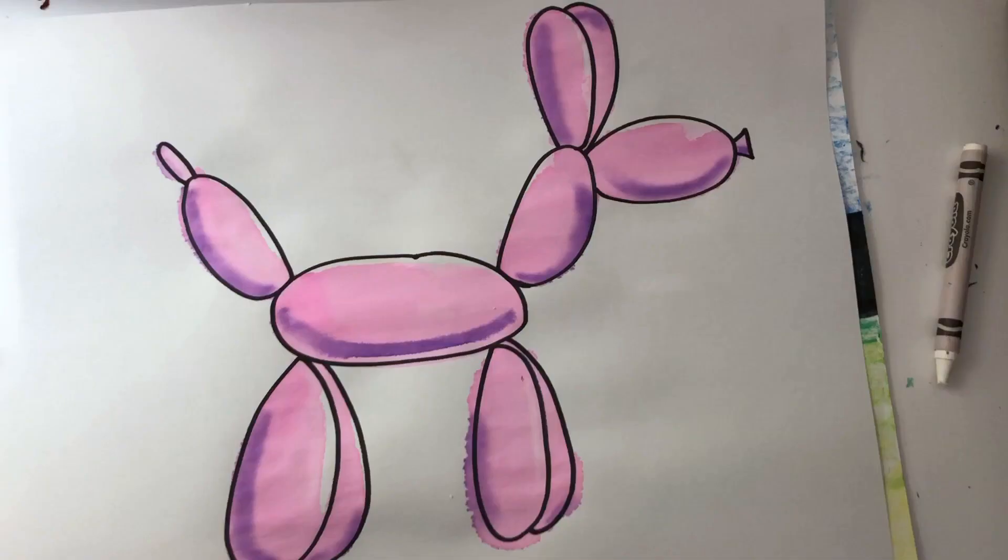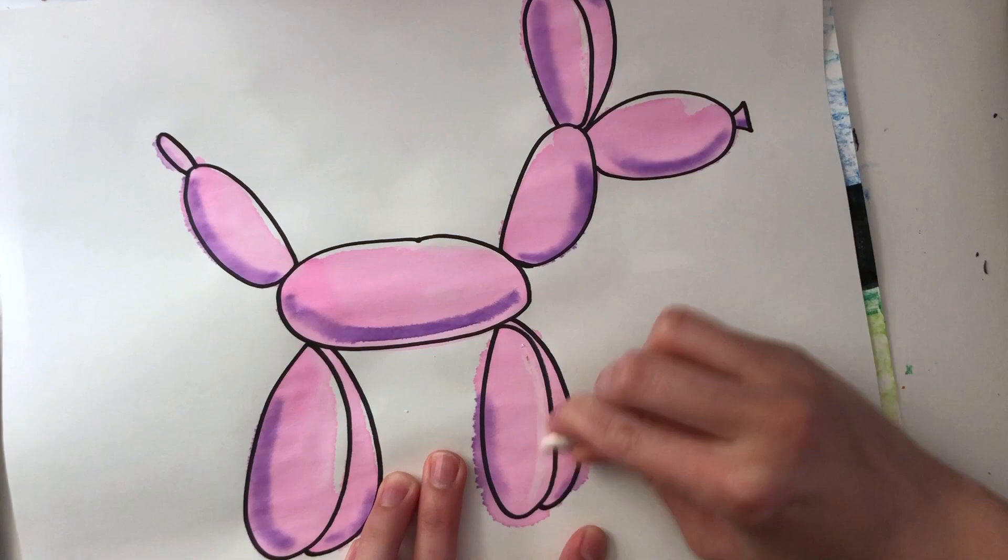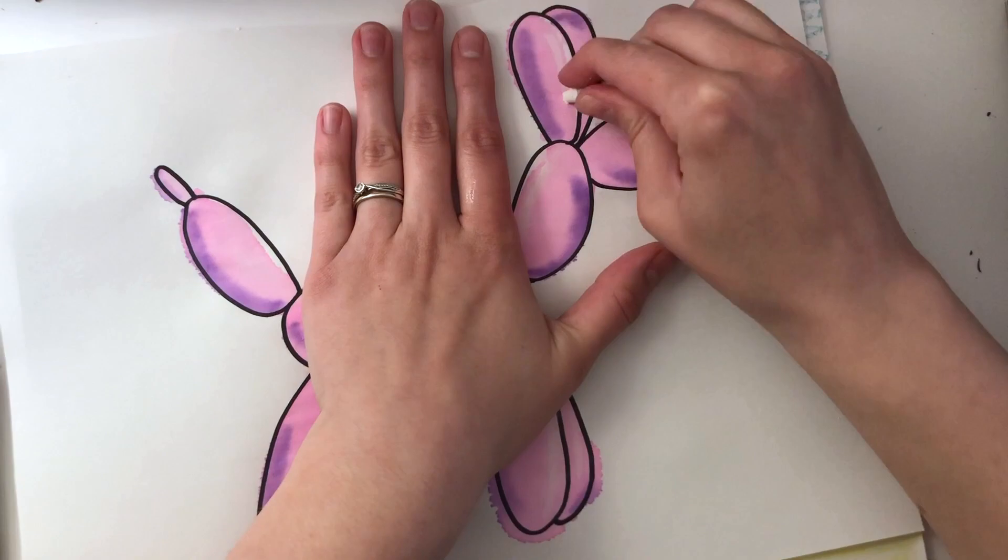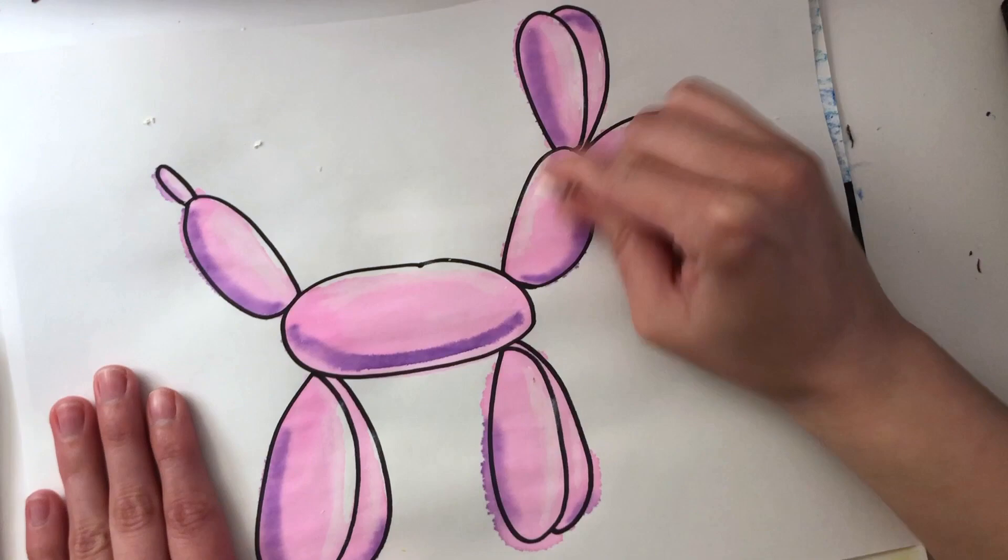Something I recommend doing is when your dog is dry, use a white crayon, oil pastel, or even white paint and really brighten up those shiny parts on the balloons. This will really help them pop. Your dog will look a lot more 3D and definitely a lot like Jeff Koons' shiny balloon sculptures.